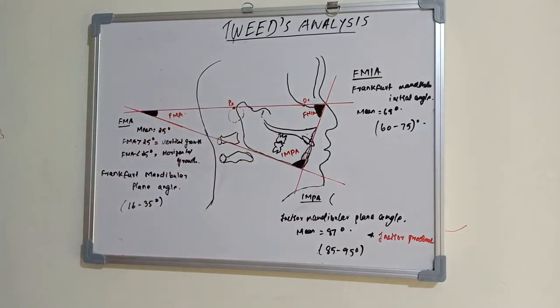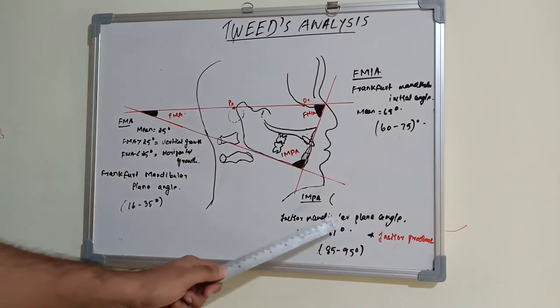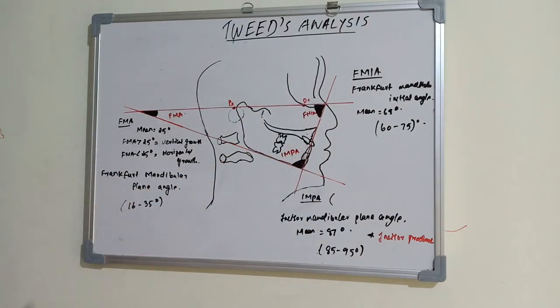So this angle is known as FMA angle. It's nothing but Frankfurt Mandibular Plane Angle. This is Incisor Mandibular Plane Angle, and this is Frankfurt Mandibular Incisor Angle. So let's see what is Frankfurt Mandibular Plane Angle.